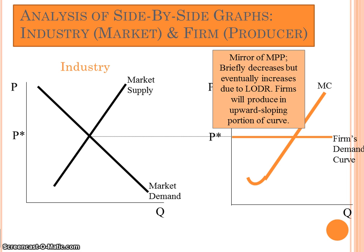Another important curve for the individual producer is the marginal cost curve. Marginal cost is the additional cost of producing an additional unit of output. This is the mirror of the marginal product curve, and since the marginal product curve represents the law of diminishing marginal returns, the marginal cost curve is shaped the way it is because of that law. Firms always produce in the upward-sloping portion of their marginal cost curve.